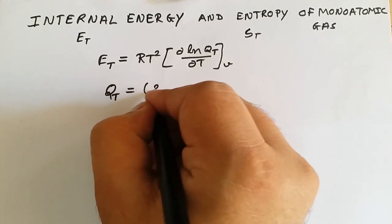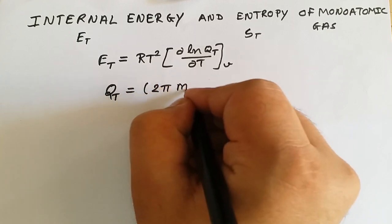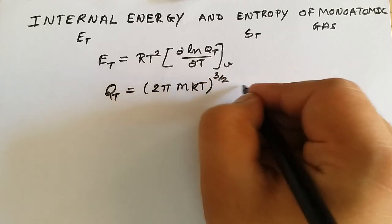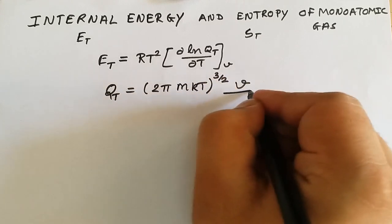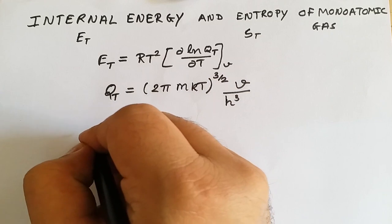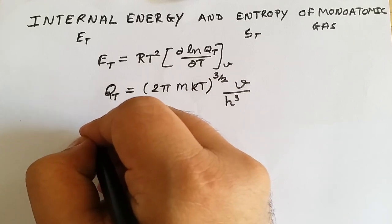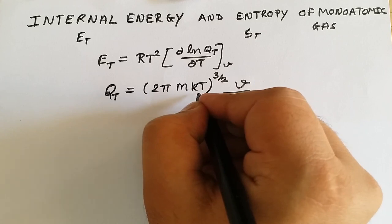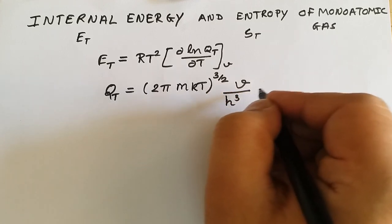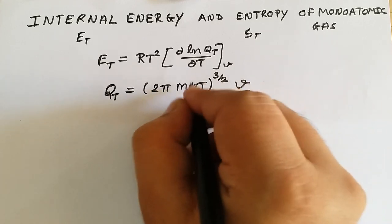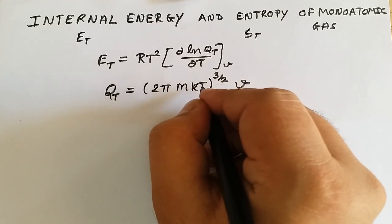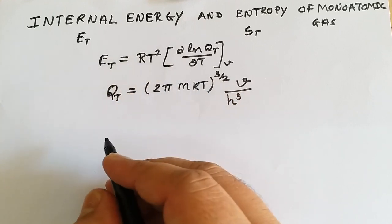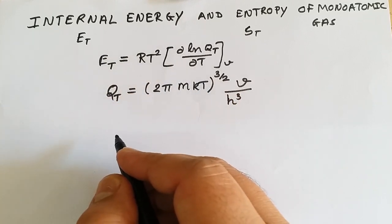The translational partition function q_t, which we derived in earlier lectures, is equal to (2πmkT)^(3/2) × V / h³, where m is the mass, k is Boltzmann's constant, h is Planck's constant, V is the volume, and T is the temperature. We now need to convert this q_t to find d(ln q_t)/dT.